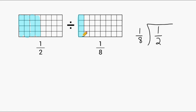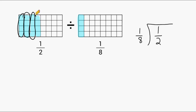In one group of 1 eighth, we have 4 thirty-seconds. We are going to consider that one group. As you can see, we have a group of 1 eighth here, another group of 1 eighth here, a third group of 1 eighth, and a fourth group of 1 eighth. So it takes 4 groups of 1 eighth to make 1 half, meaning 1 half divided by 1 eighth equals 4.